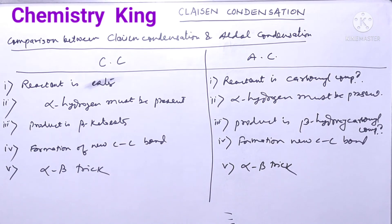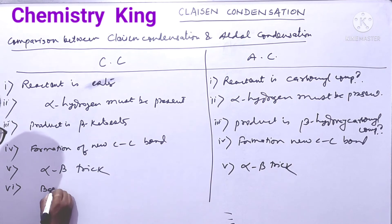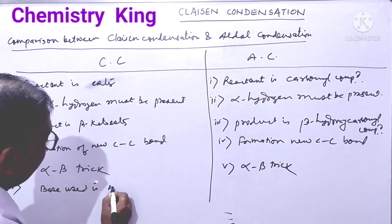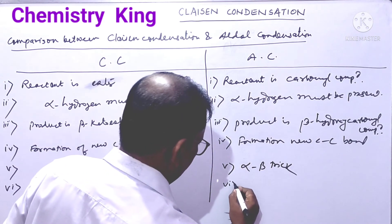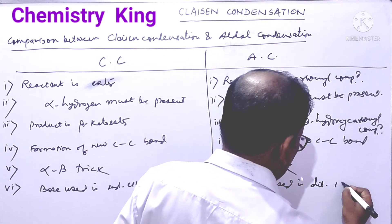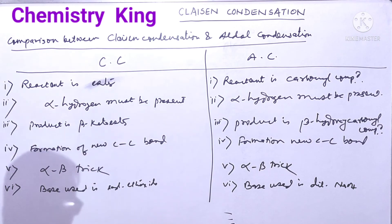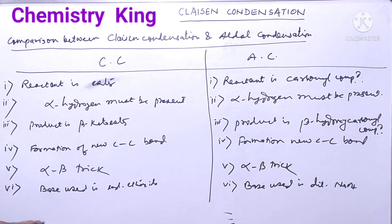Number 6: In Claisen Condensation, the base used is sodium ethoxide. In Aldol Condensation, the base used is dilute NaOH. Sodium ethoxide is more basic than dilute NaOH, so we use sodium ethoxide in Claisen Condensation. But at both places, a base is used.